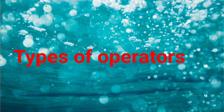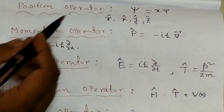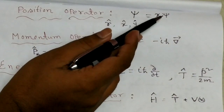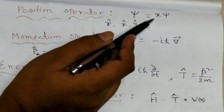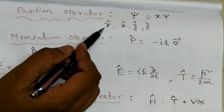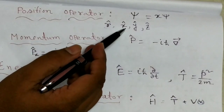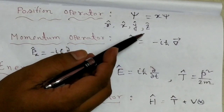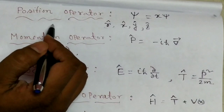There are many types of operators. For position, we use the operator: psi = x·psi, where x is the position operator, and we can write it as r-cap, x-cap, y-cap, z-cap. This is the position operator.